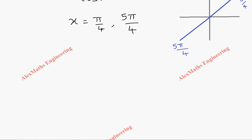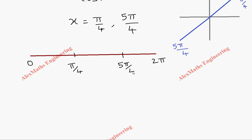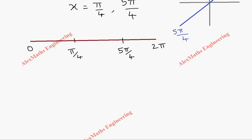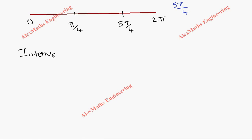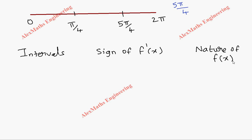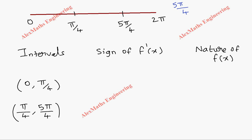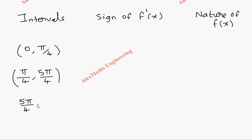Let's take a number line using the interval 0 to 2π and plot these two x values. The number line ranges from 0 to 2π, with π/4 and 5π/4 marked, giving us three intervals to analyze.